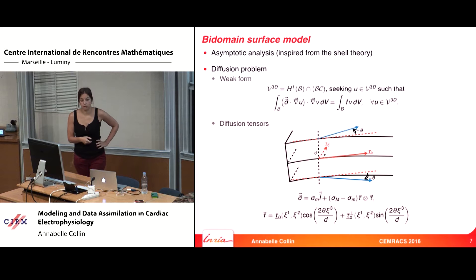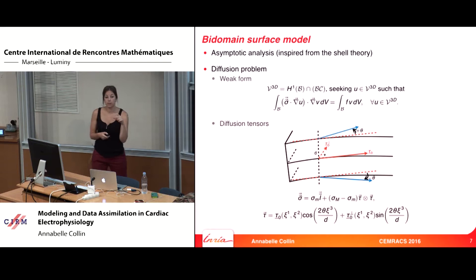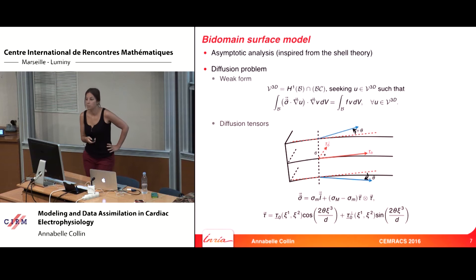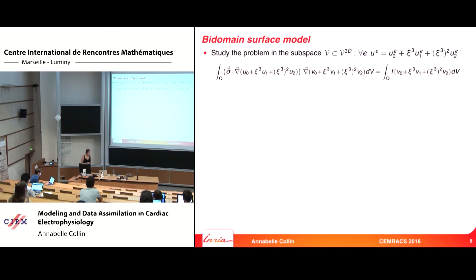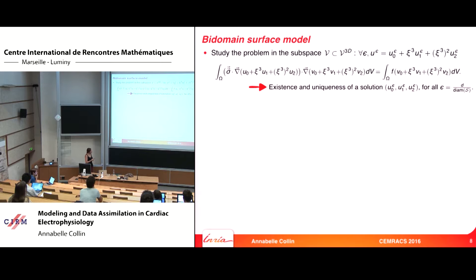If theta equals zero, there is no variation across the thickness — everything is along T0. The more important theta is, the more you have to consider the direction orthogonal to T0. We performed an asymptotic analysis inspired from shell theory, considering an asymptotic decomposition of U and V. There is existence and uniqueness of a solution depending on epsilon, the dimensionless small parameter equal to the thickness over the surface diameter.